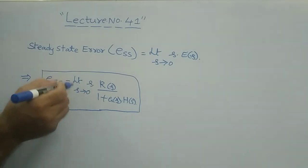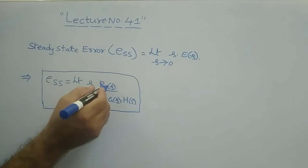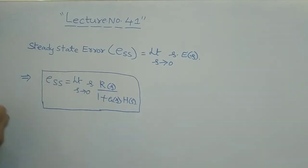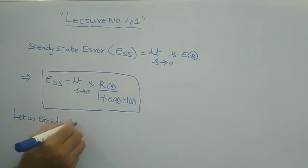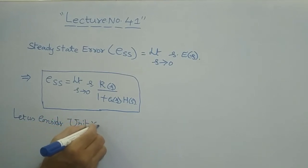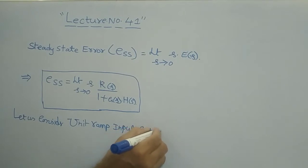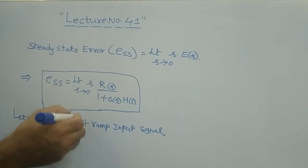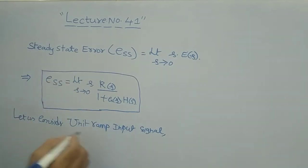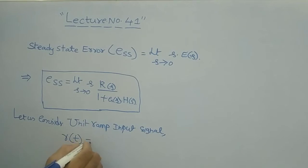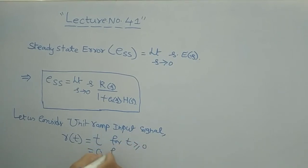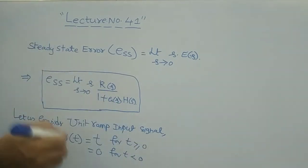This is the general definition of steady state error where R(s) is the input. Now let us consider the unit ramp input signal. Unit ramp is defined as r(t) equals t for t greater than or equal to 0, and r(t) equals 0 for t less than 0. This definition has already been covered in earlier classes.